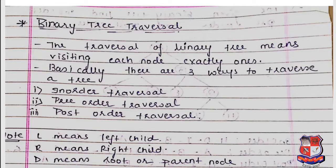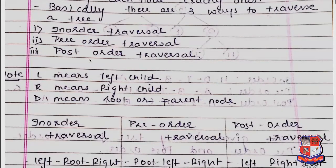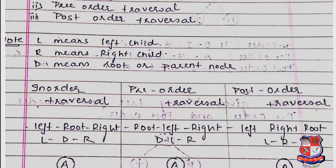For the traversal notation, L indicates the left child, R means right child, and D means root or parent node. So in in-order traversal, we follow certain rules.